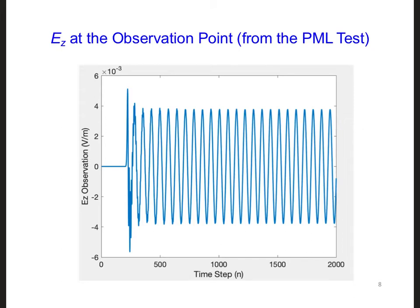FDTD operates in the time domain, but what we're really after here is the sinusoidal steady state magnitude of the signal at different positions from the transmitter.